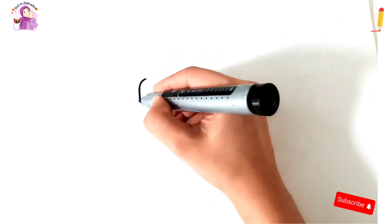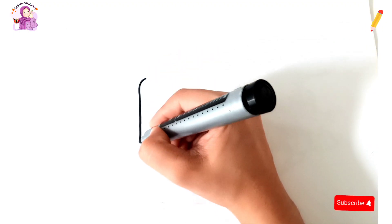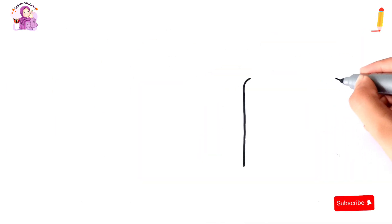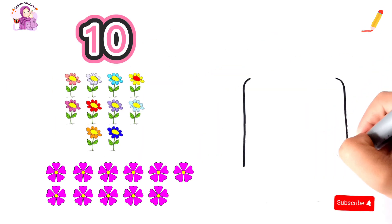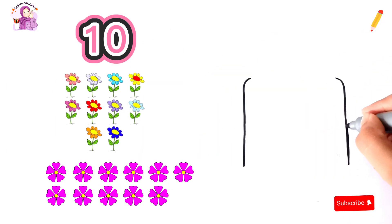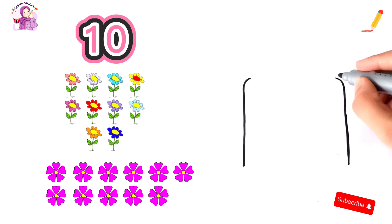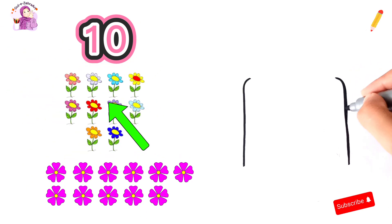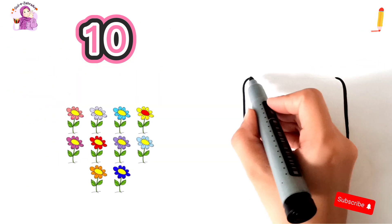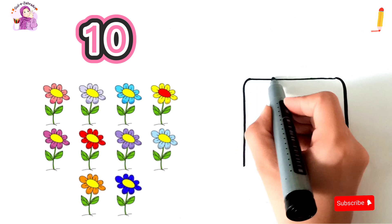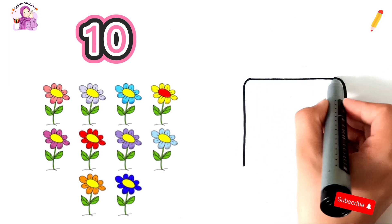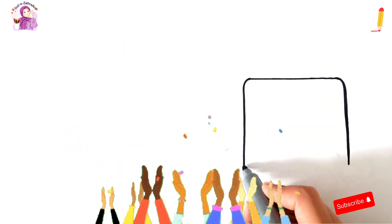First, draw the shape of the cake. While we draw it, let's learn the digit 10. Point out the objects which are 10 in number. Colorful flowers — these colorful flowers are 10 in number. Yay!